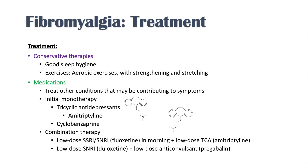Another combination therapy option is a low-dose SNRI like duloxetine with a low-dose anticonvulsant like pregabalin. These combinations have shown some evidence of helping patients with fibromyalgia. In summary: start with conservative therapies — good sleep hygiene and exercise — treat other contributing conditions like depression and anxiety, then try initial monotherapy with amitriptyline, and if needed move to combination therapy with low-dose SSRI plus amitriptyline, or low-dose SNRI plus anticonvulsant.